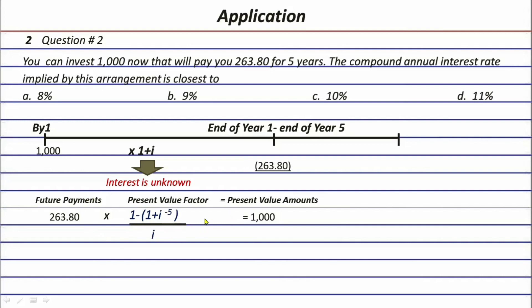Now let's actually solve. If the problem asks for the interest rate and there are choices, you don't need to interpolate — just substitute the percentages and see which gives the present value of one thousand. If we try eight percent, we get 1,053. So eight percent is not the rate we're looking for. We need to lower 1,053 to one thousand, which means we need to try a higher rate.